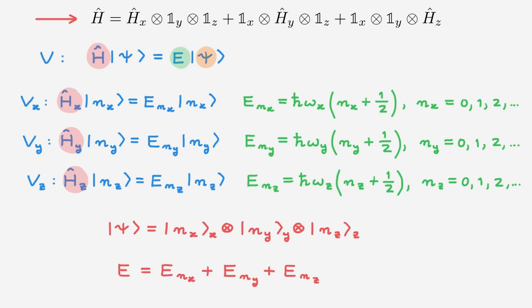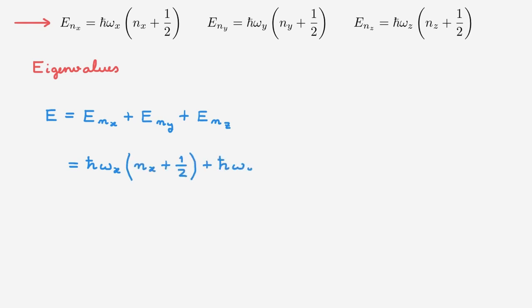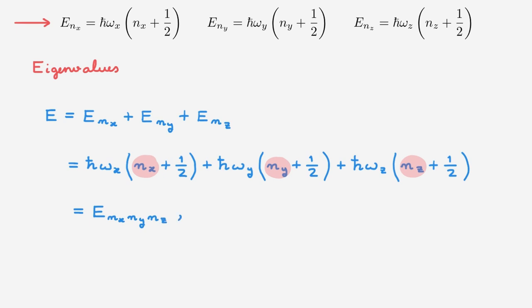In the rest of the video, we will explore some interesting features of the three-dimensional quantum harmonic oscillator. The eigenvalues E are given by the sum of Enx, Eny and Enz. Given the expressions for the one-dimensional eigenvalues, we can rewrite E as equal to the sum of a term proportional to omega x, a term proportional to omega y, and a term proportional to omega z. The eigenvalues are labelled by a collection of three numbers nx, ny and nz, each of which can take any non-negative integer value.